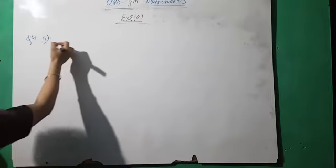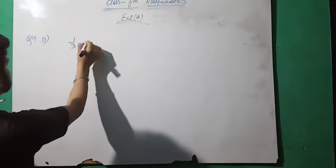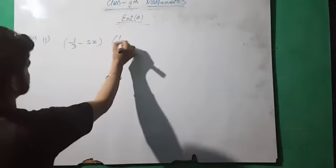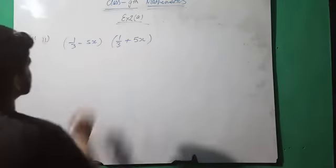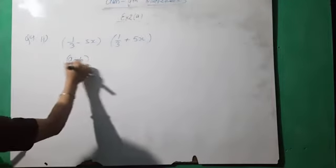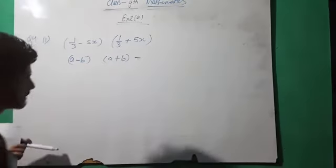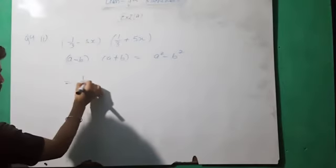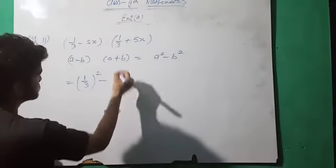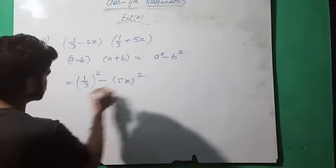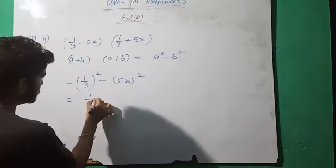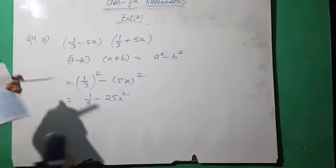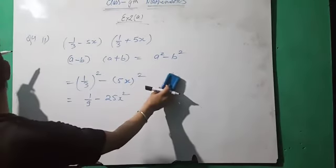The first part of question four is again very simple. We have to do it as per the instruction in your fair copy. Here a is 1 by 3, so a square is 1 by 9, and b square is 5x square, so the answer is 1 by 9 minus 25x square.